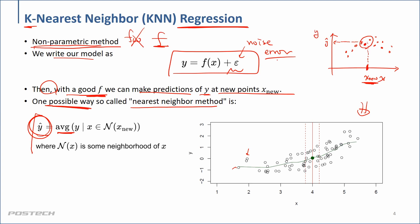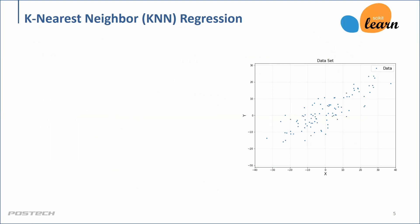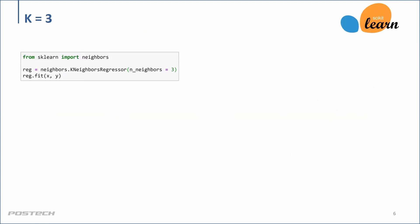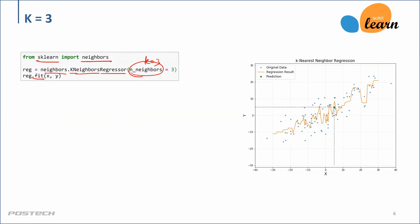So again, for k-nearest neighborhood regression: given a new input, find k neighbors among the training dataset, take the corresponding true labels, and compute their average. In scikit-learn we have KNeighborsRegressor — here with k equal to 3, we fit it on the training data and that's the result.